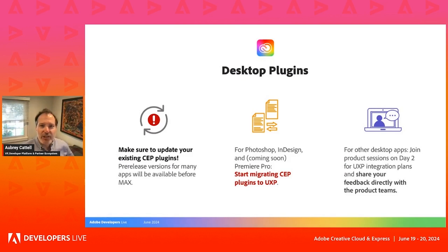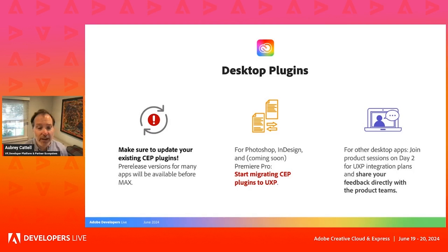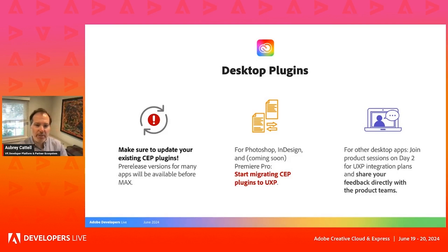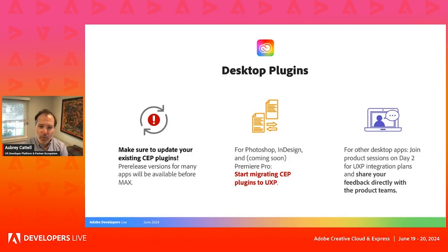Now I want to talk about desktop plugins and where we are. Tomorrow on day two, we're really going to focus on the Creative Cloud desktop applications — you'll get the latest updates for CEP, for UXP, and for developer tools. On CEP specifically, we're excited to share that CEP 12 now comes with major updates, including a Chromium update and a much-needed migration from OpenGL to Metal. CEP 12 will ship with all major Creative Cloud apps at MAX this year. That said, we aren't planning on adding new features or major updates after CEP 12.